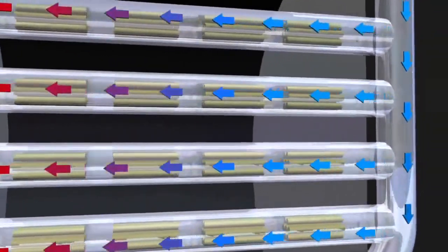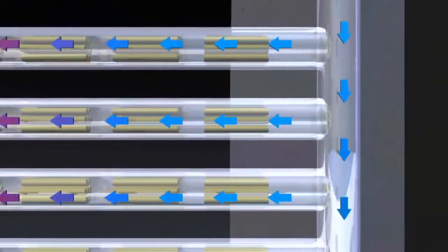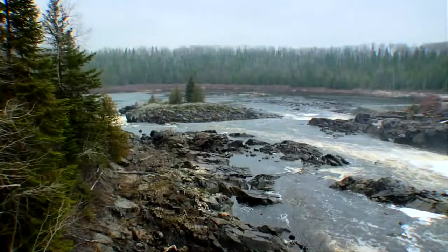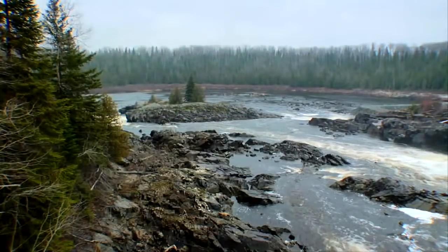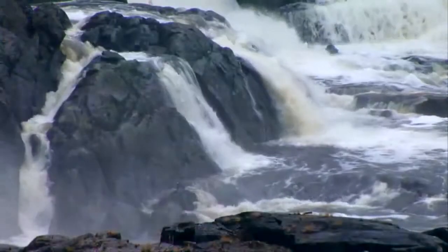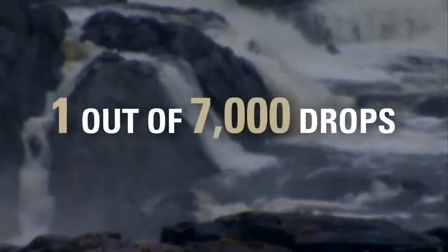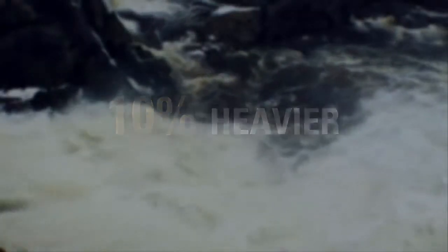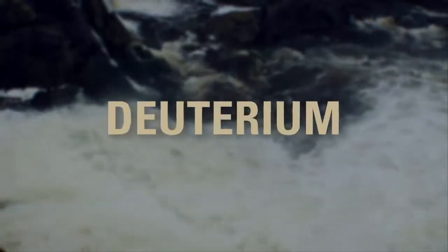In CANDU reactors, a special kind of water called heavy water flows around the fuel bundles. Heavy water is found in all water, rivers, lakes and oceans. On average, one out of every 7,000 drops of water is heavy water. It's 10% heavier than ordinary water, because it incorporates a heavy form of hydrogen called deuterium.